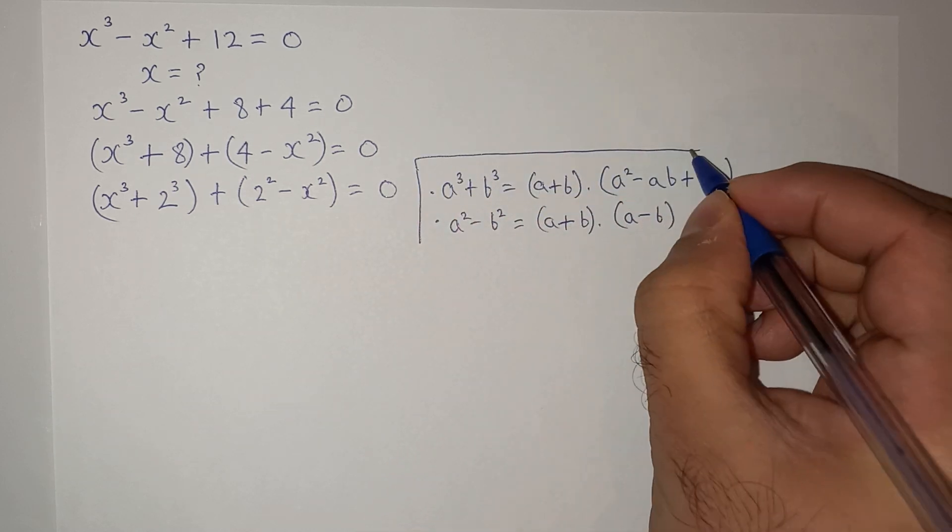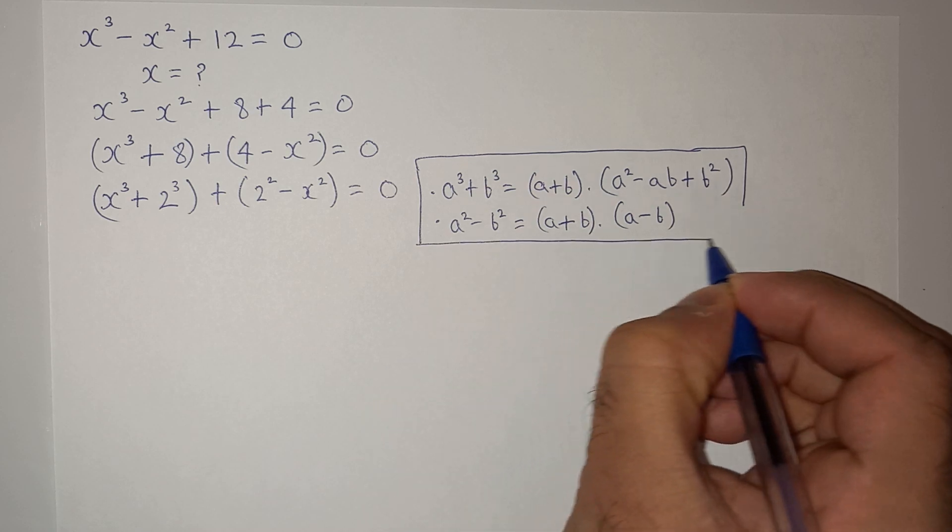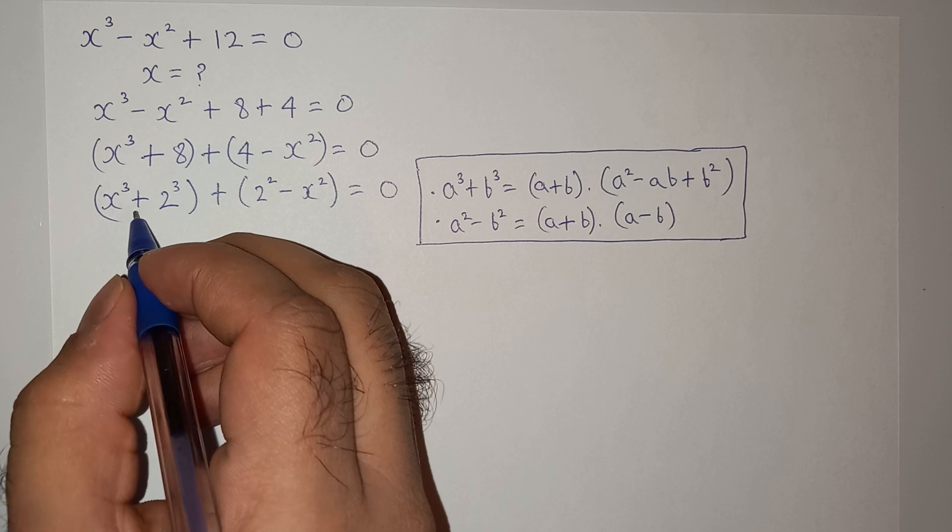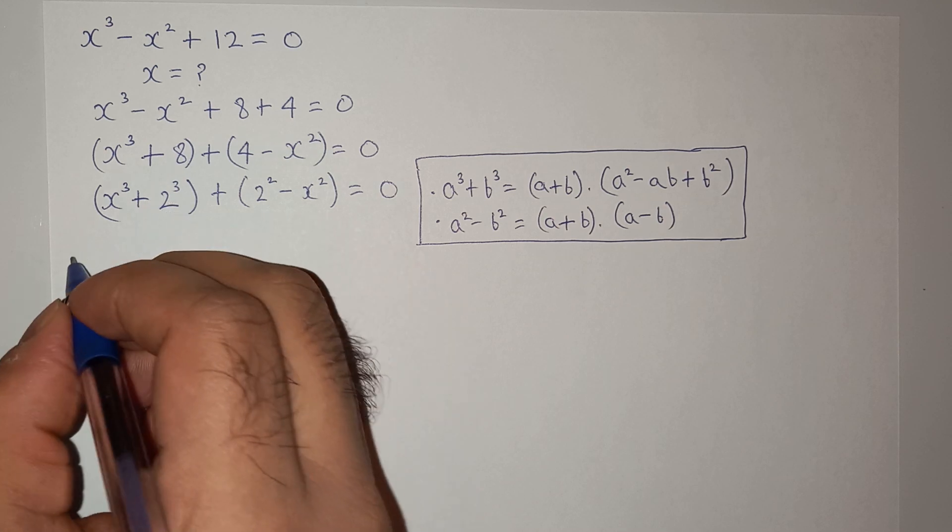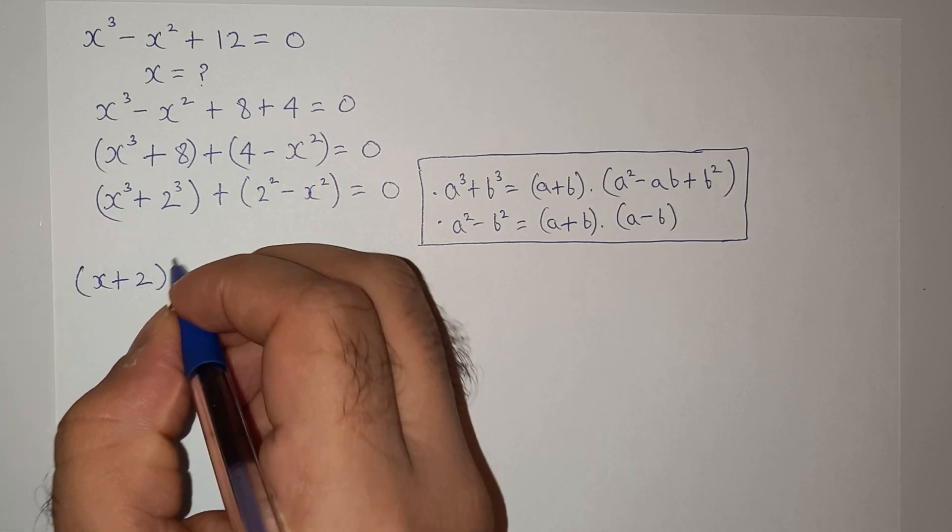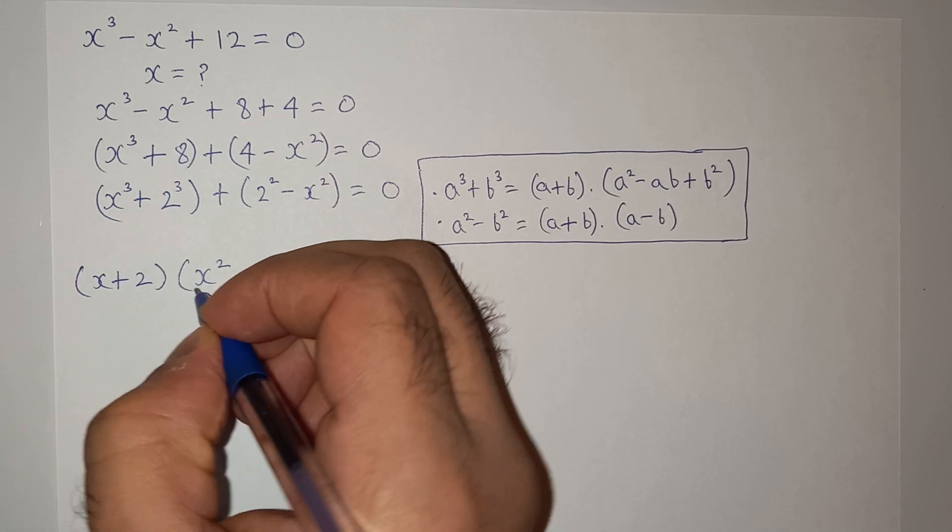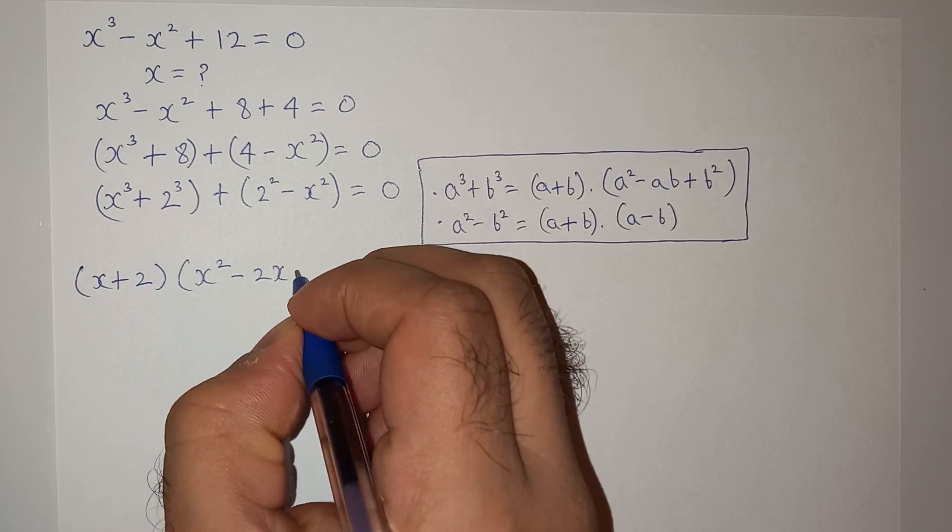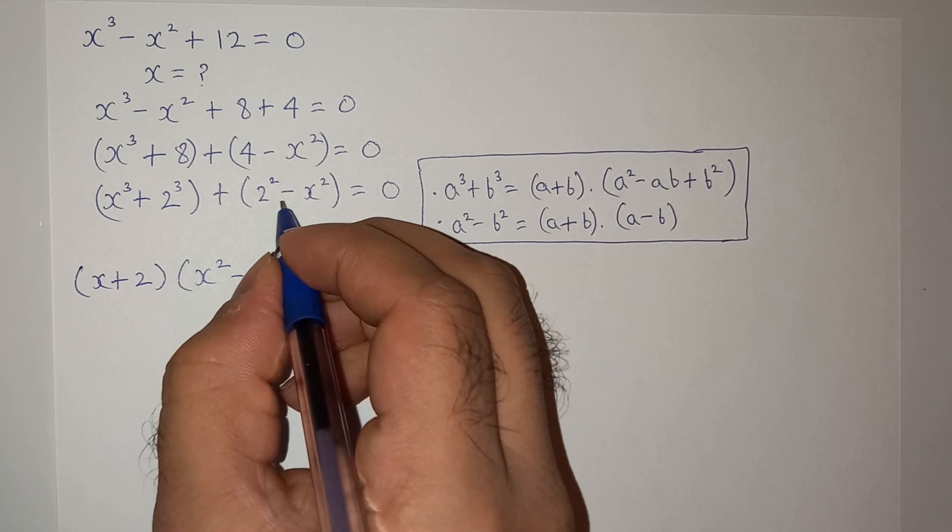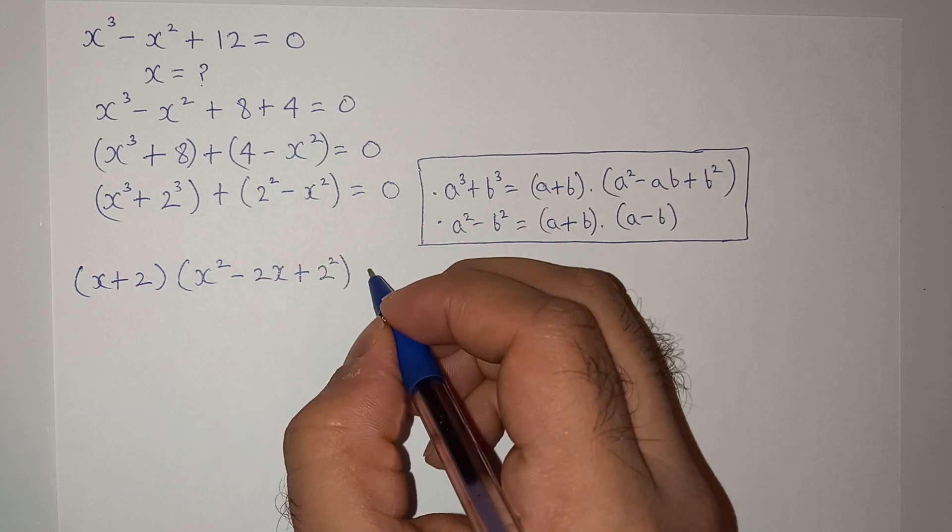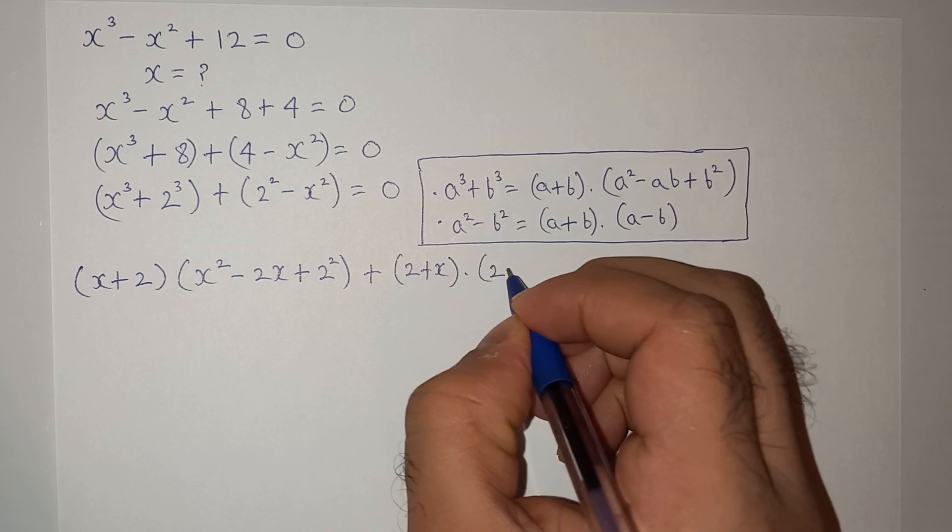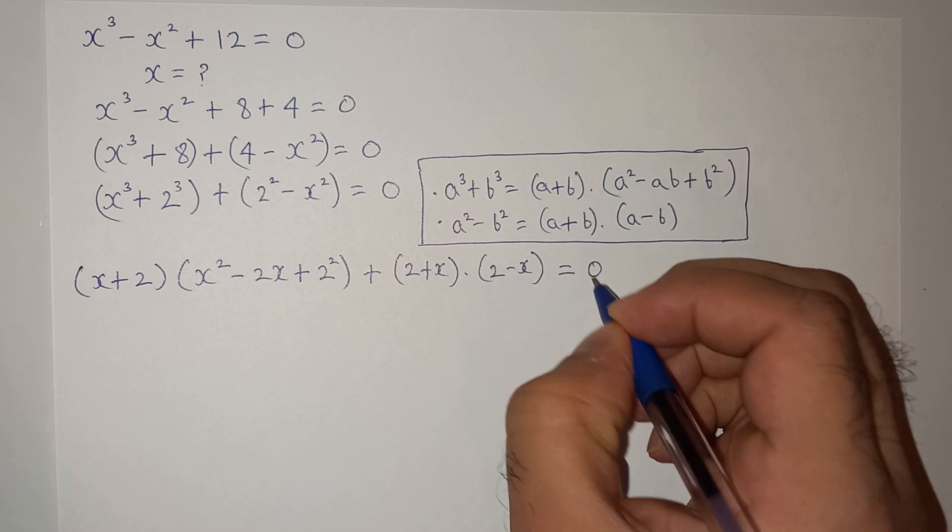So we are going to apply these two formulas in our question to find the solution. So x cubed plus 2 cubed can be written as (x plus 2)(x squared minus 2x plus 2 squared), and 2 squared minus x squared can be written as (2 plus x) multiplied by (2 minus x) equals to 0.